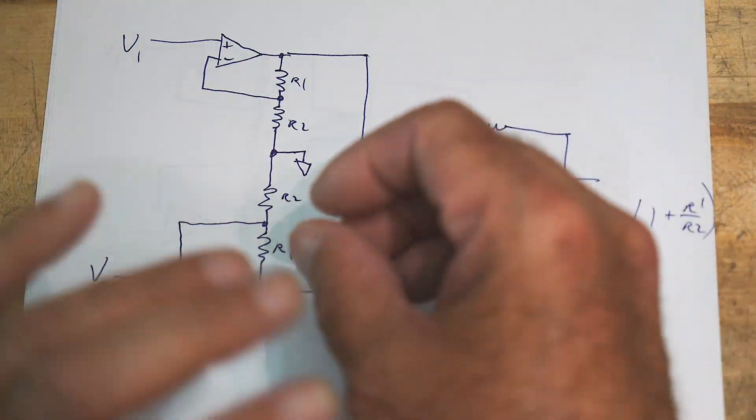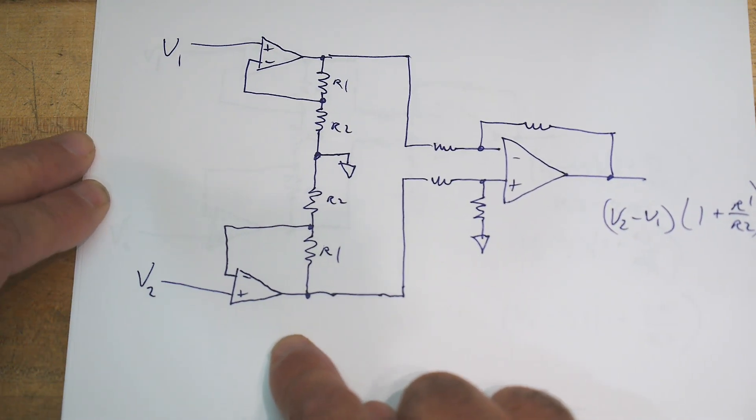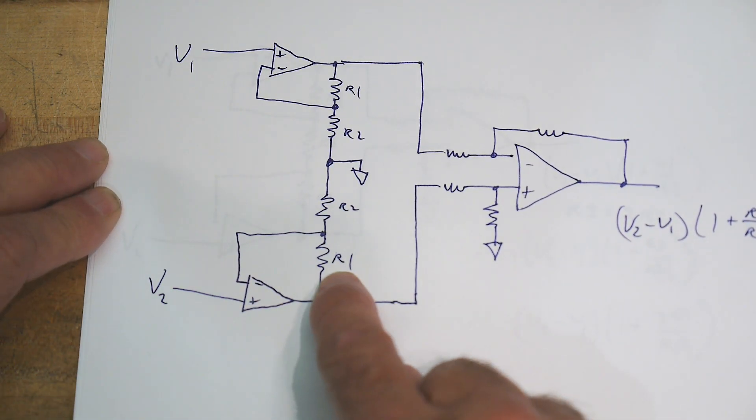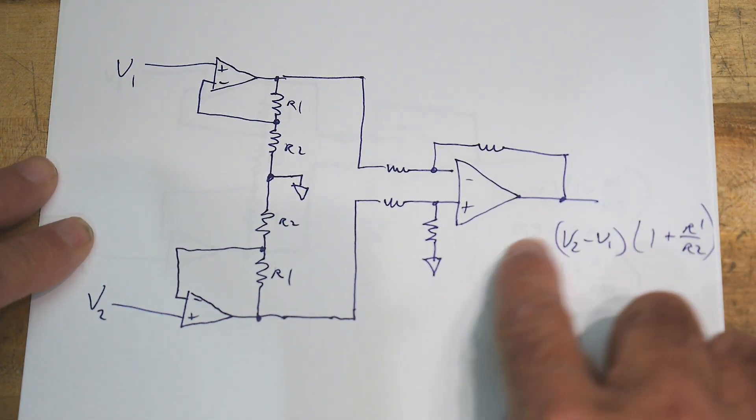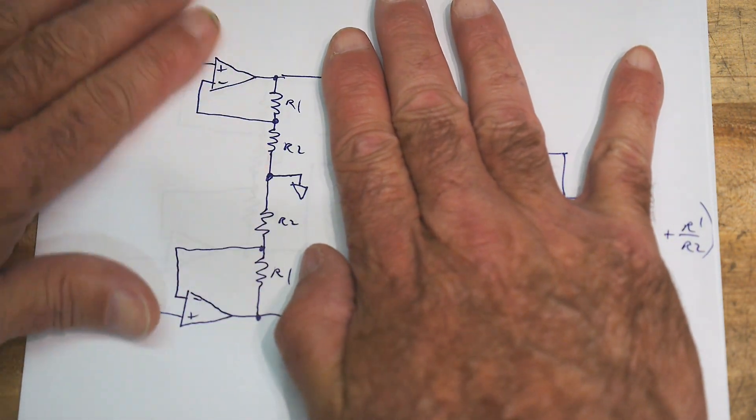All I've done is pen and paper, no electronics, just pen and paper - we've just drawn it a different way. The output is exactly the same, 1 plus R1 over R2, exactly the same. We just drew it a different way.